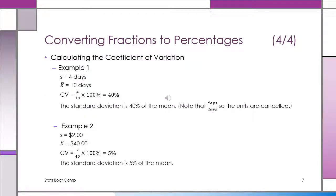Example one, the standard deviation was 4 days. The sample mean was 10 days. And the coefficient of variation is 4 over 10 times 100%, or 40%. In other words, the standard deviation is 40% of the mean. Example two, using the same logic, you can see that the coefficient of variation is 5%. The standard deviation is 5% of the mean.